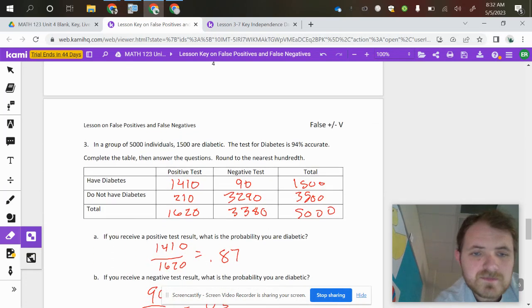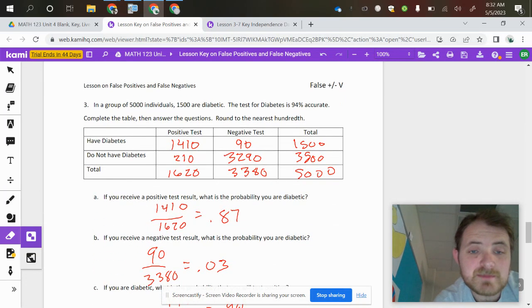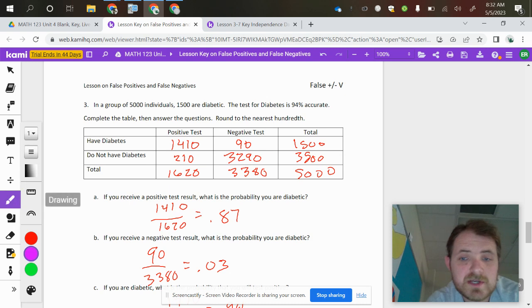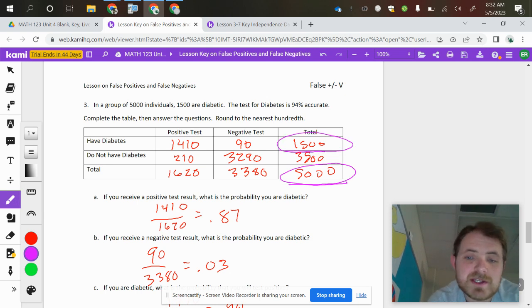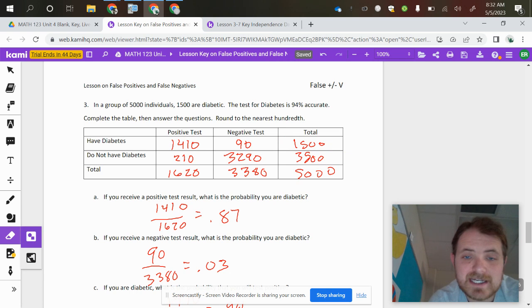So looking at our last section here, we've got 5,000 people that are in our study and only 1,500 are diabetic. So again, we want to start with that total there of 5,000 and kind of work our way up there. So we've got 1,500 people that have diabetes, making the difference between those 3,500 people not having diabetes.